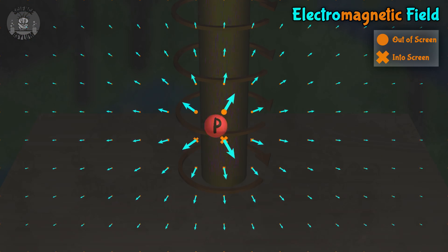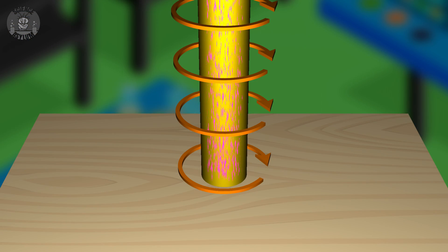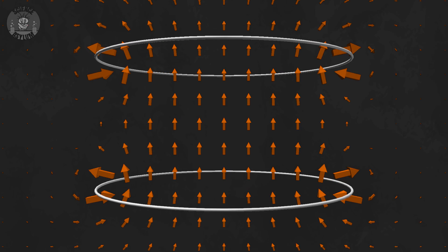The point is, magnetism appears when charge moves. It doesn't matter if it's a single charge or a whole bunch of charges moving through a long wire. It doesn't even matter how that wire is shaped. Moving charge affects the magnetic field.